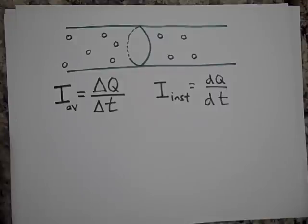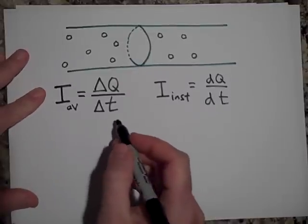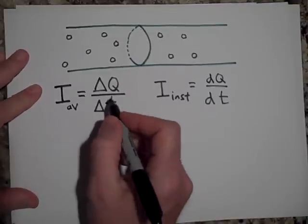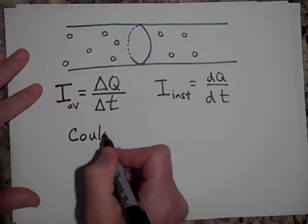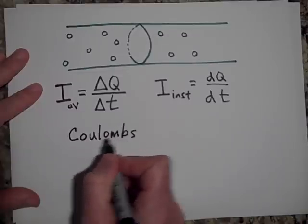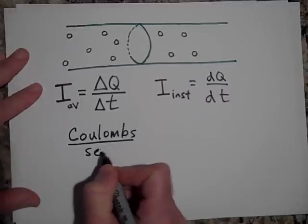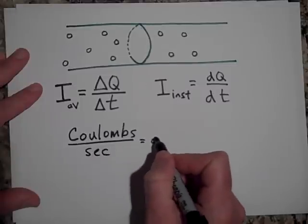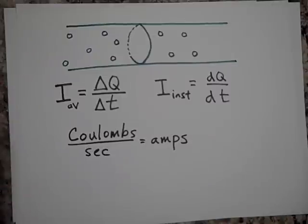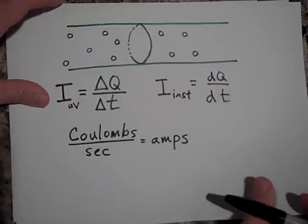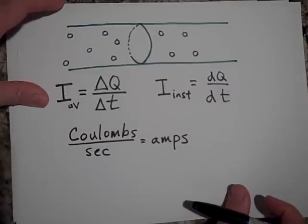The units for current are going to be coulombs per second. A coulomb per second is equal to an amp. So that is what current is all about.